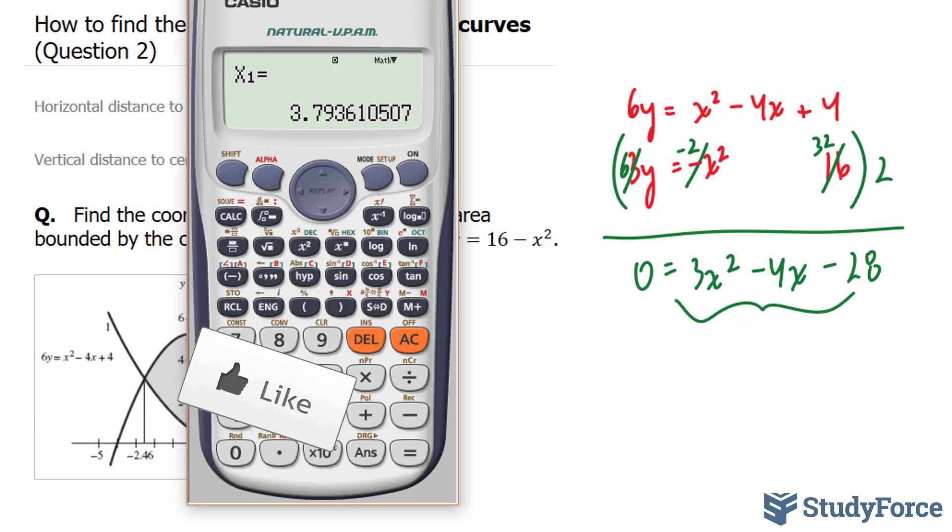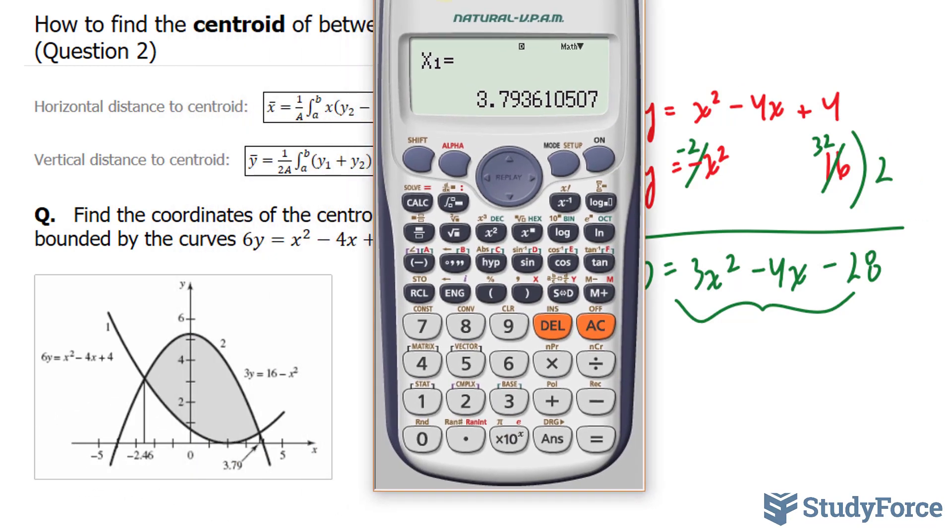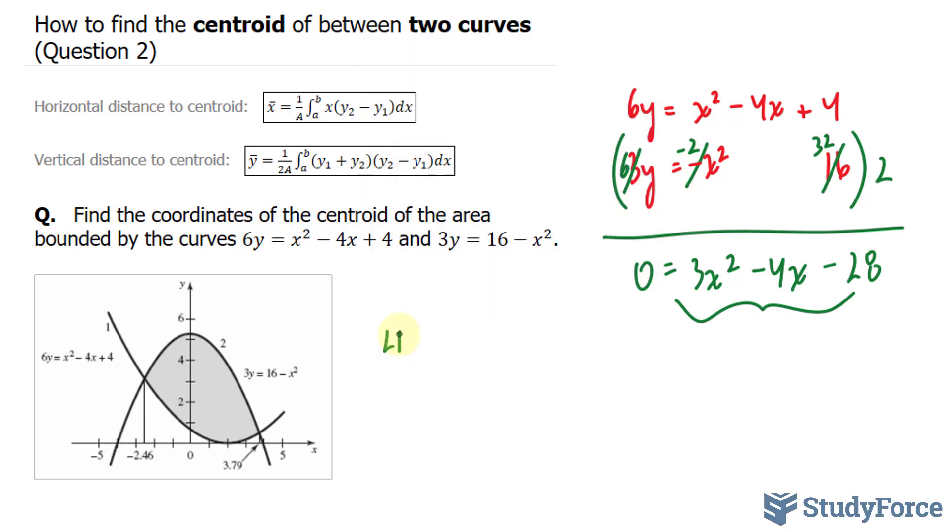We get 3.79 and the next one is negative 2.46. So let's write that down. Our lower bound is negative 2.46 and our upper bound is 3.79. The next thing that I have to do before inputting my functions into these two equations is I have to find out what a is equal to. a represents the area. So I need an equation that will represent the shaded region between these two curves.